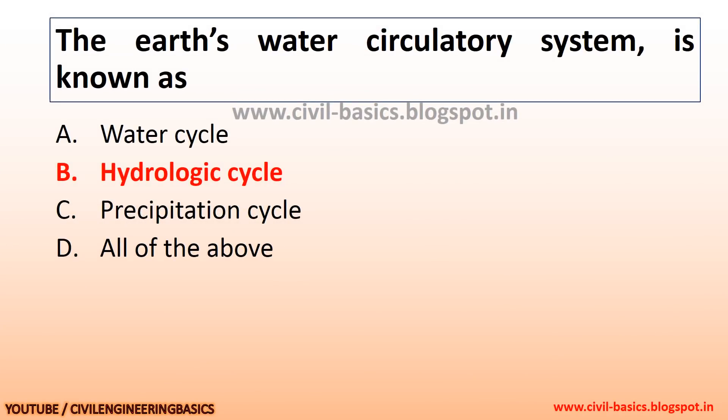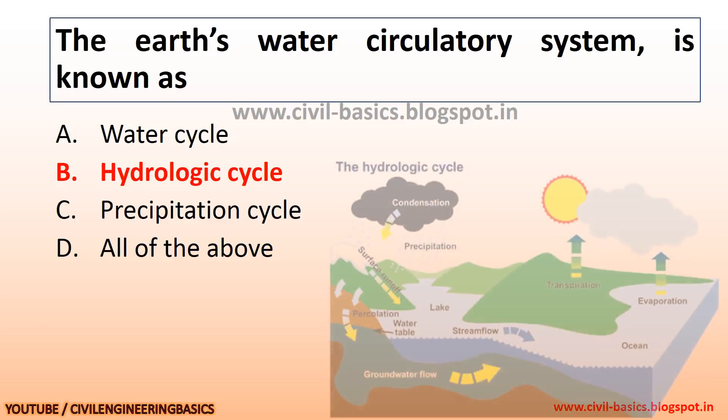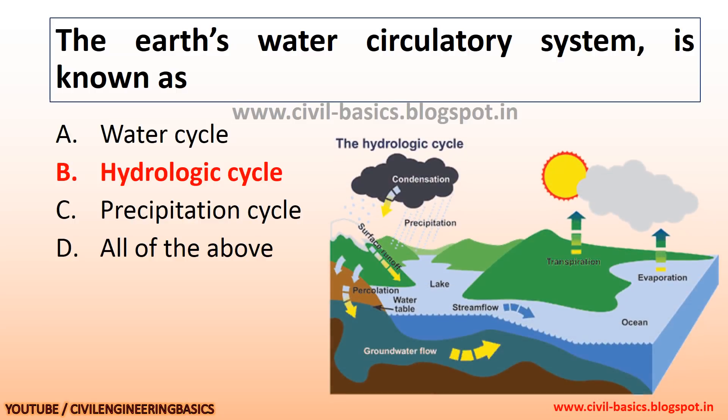The Earth's water circulatory system is known as the hydrologic cycle. You can see the hydrologic cycle right here.